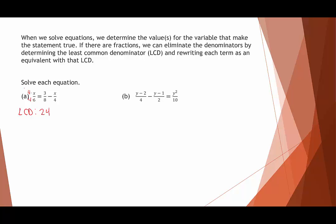We do the same thing with 3 over 8 — to get to 24 we multiply by 3, so we multiply that fraction by 3 over 3. For x over 4, we multiply by 6, so we multiply that fraction by 6 over 6. That gives us 4x over 24 equals 9 over 24 minus 6x over 24.